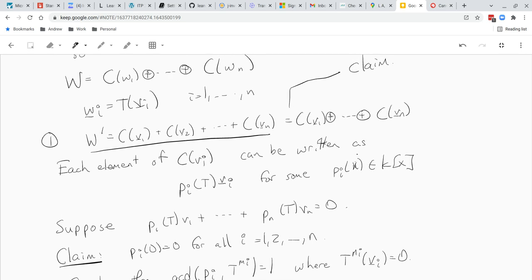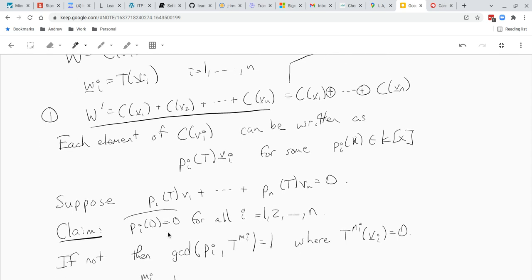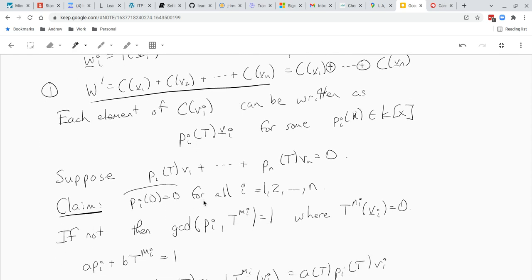So our first part of the claim is we're going to try to show that in these polynomials, they all have trivial constant term. And we're going to show if one of the constant terms is non-zero, then we get a contradiction. So let's say Pi of zero is non-zero. Well then Pi and T to the Mi have no common factor. Their GCD is one. Like the only factor of T to the Mi is T, and Pi has no factor of T. So these two have GCD one.